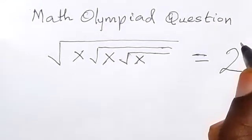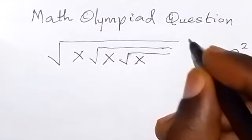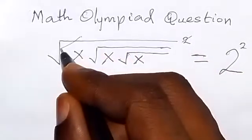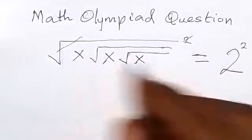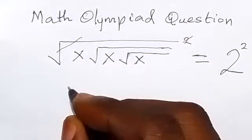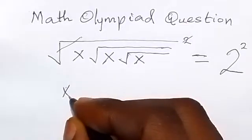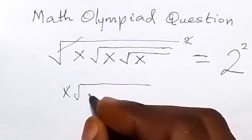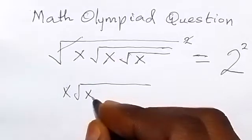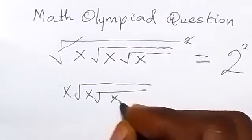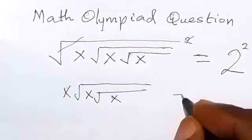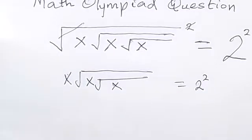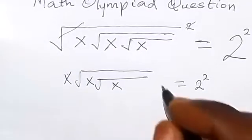When we take the square on both sides, the square cancels the square root on the first one, and we are going to have x root x equals 2 raised to the power 2. We can also take the square again of both sides.